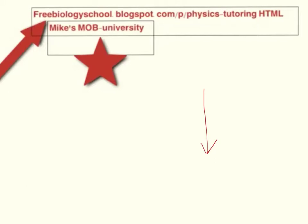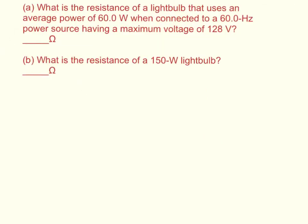Now to get to the question. What is the resistance of a light bulb that uses an average power of 60 watts when connected to a 60 Hertz power source having a maximum voltage of 128 volts?